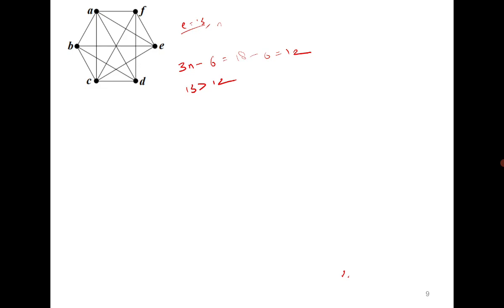At the same time, it is easy to find a subgraph homeomorphic to K5. The degree of D is 4, one vertex has degree 5, another has degree 4, two have degree 5, F has degree 4, and E has degree 4. There are 2 vertices of degree 5. If you delete edge CE and edge AE, the degree of E becomes 2, and you obtain a subgraph homeomorphic to K5. Please try it yourself.